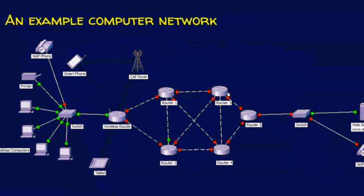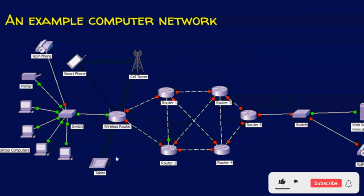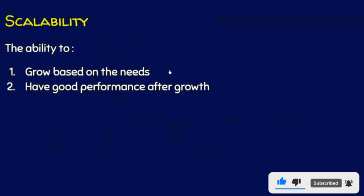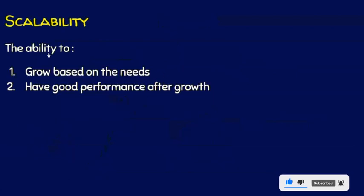In this example, assume 100 computers are connected to router 3, and we expect our computer network to work just the same even after adding these 100 devices. This is what we call scalability — the ability to grow based on needs and have good performance even after the growth of the network.